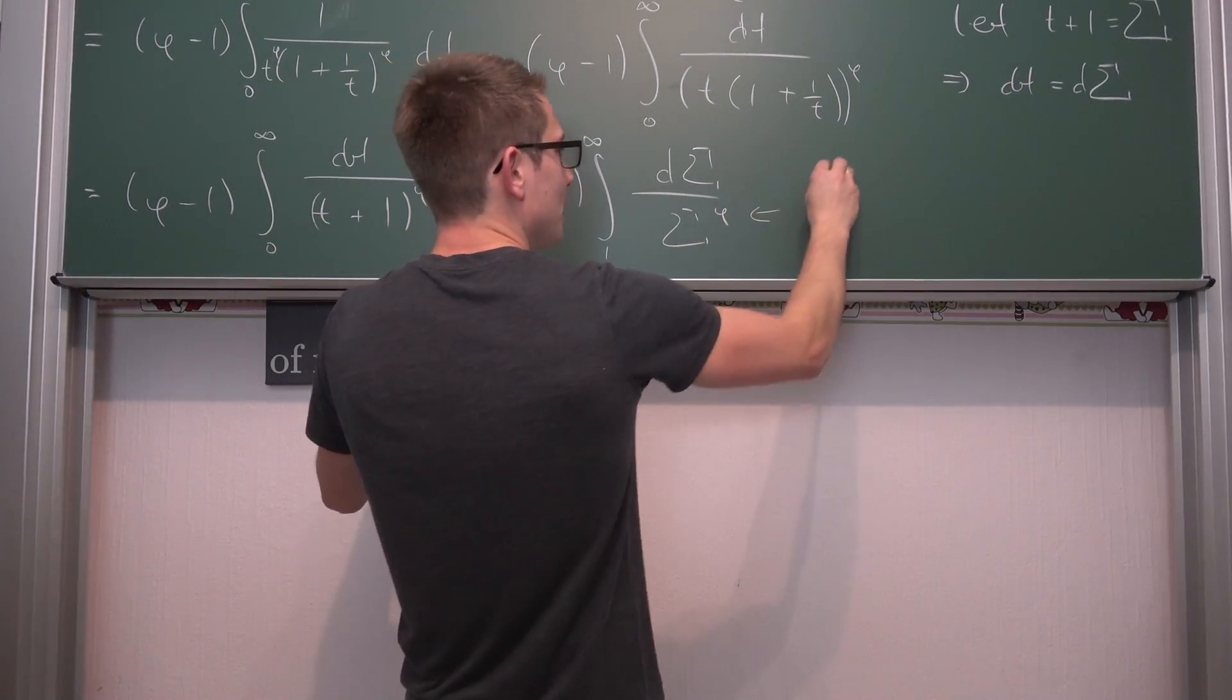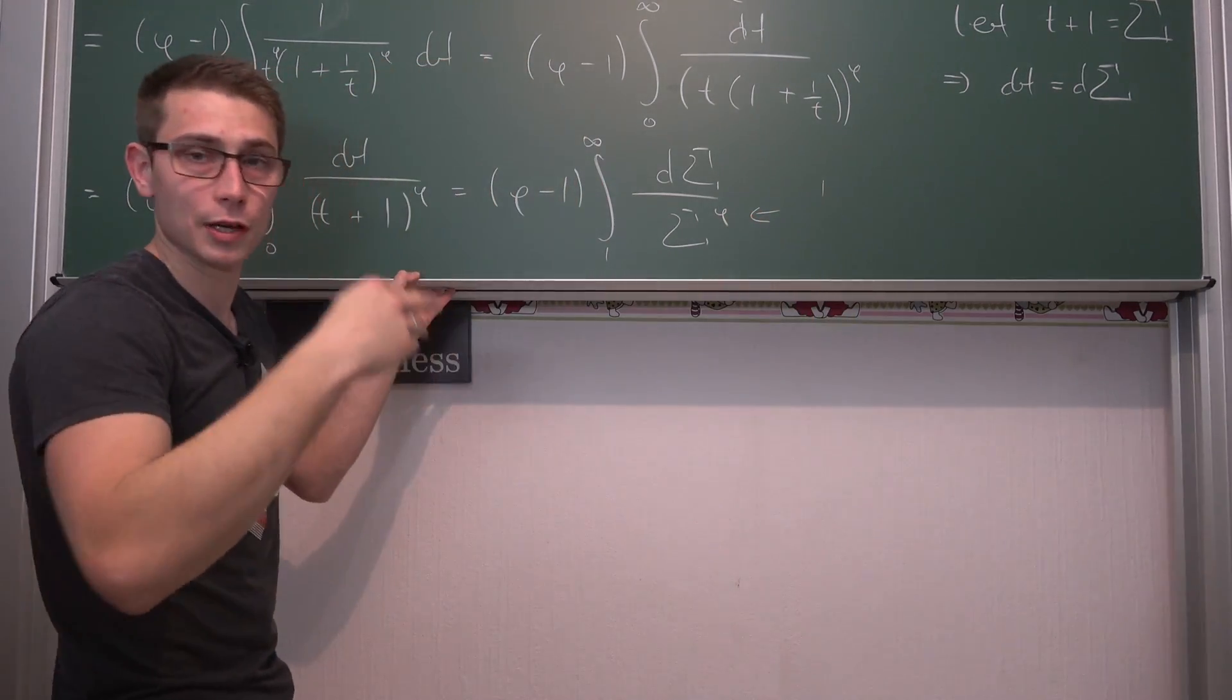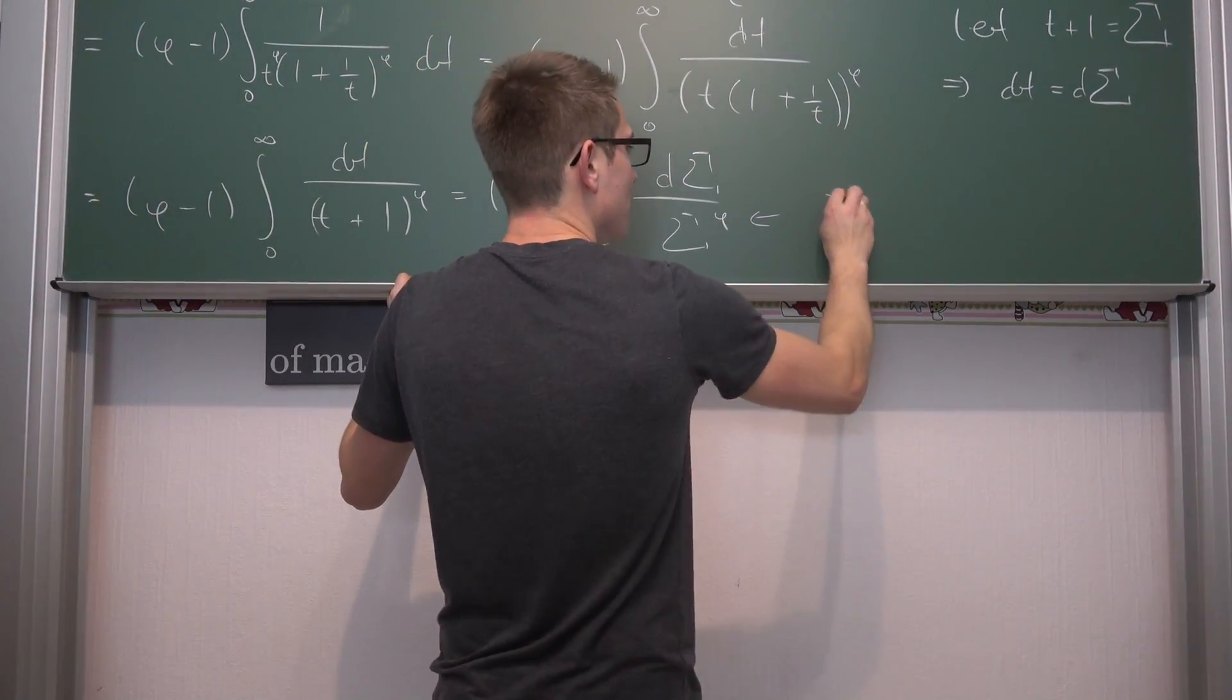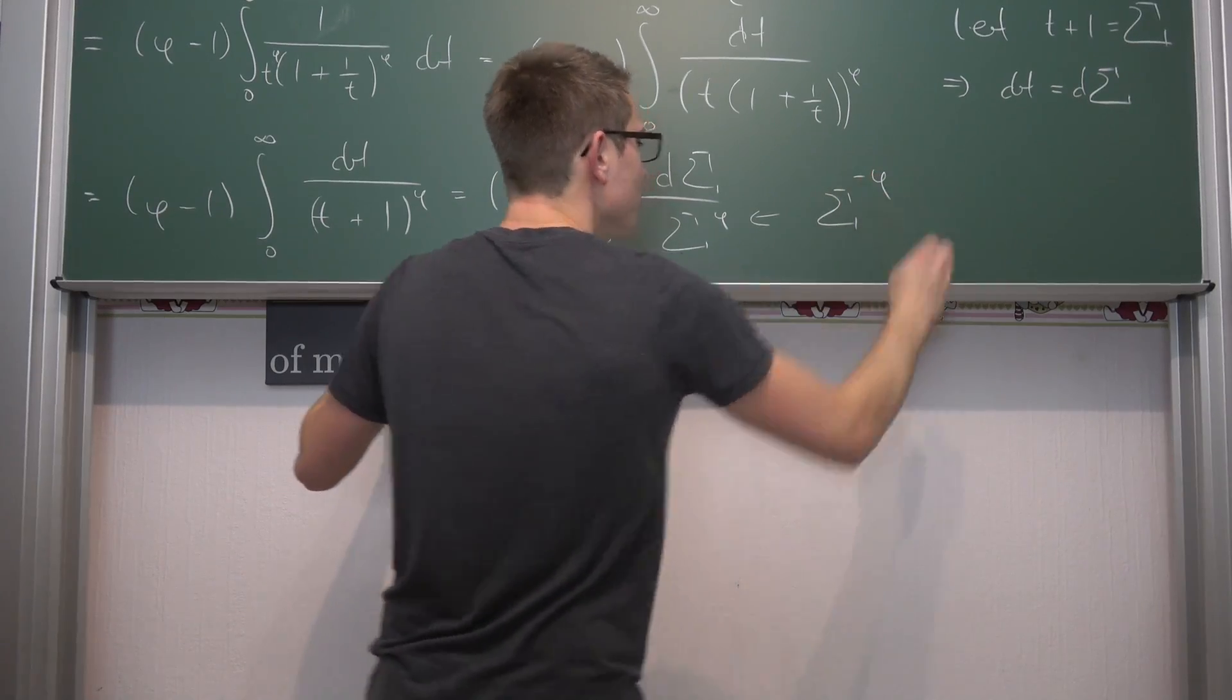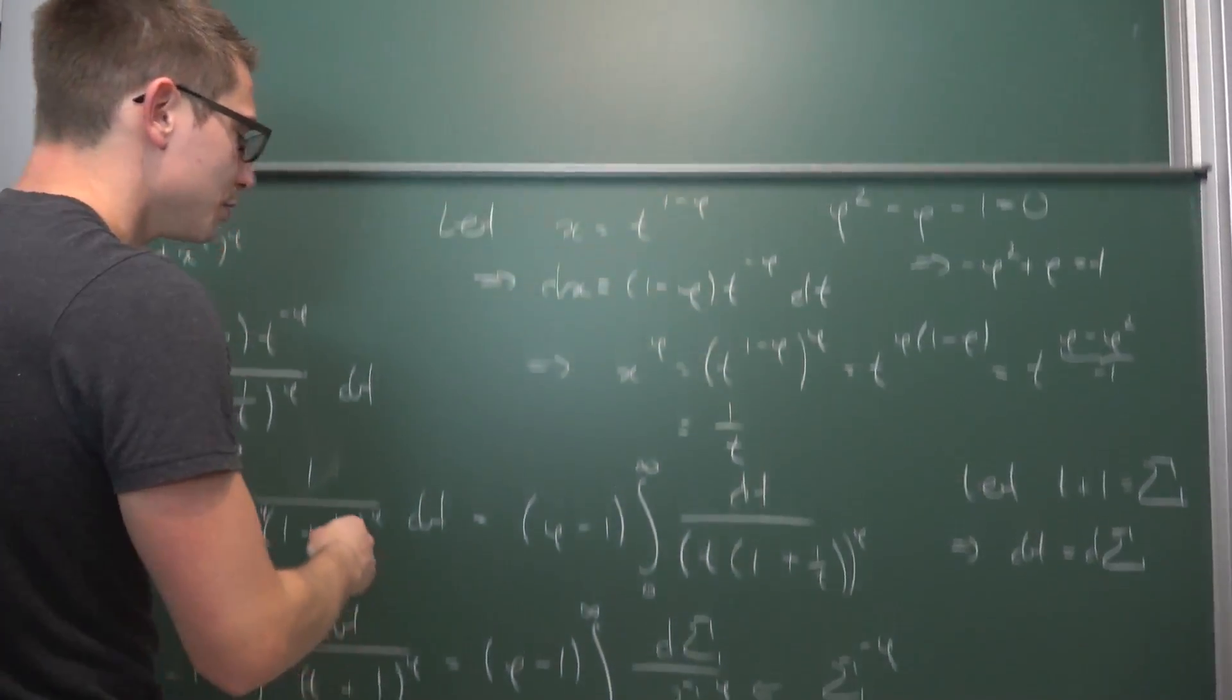All that we need to do now is, since this is 1 over sigma to the phi power, this is just sigma to the negative phi. If you were to integrate this, this is just a simple polynomial.